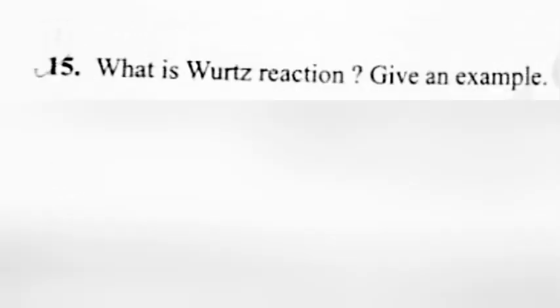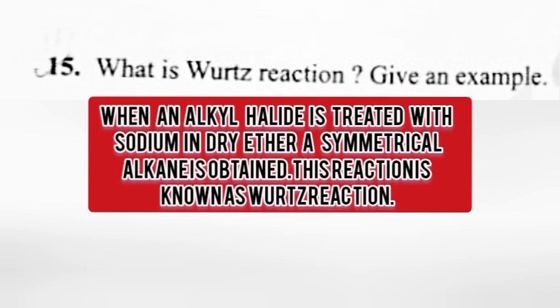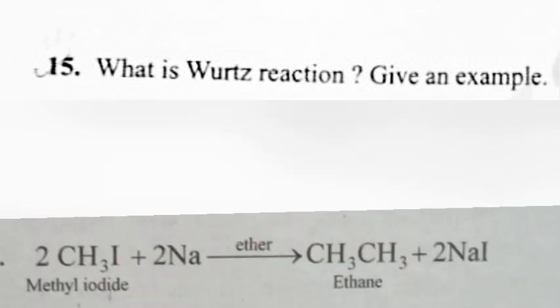Question 15: What is Wurtz reaction? Give an example. Answer: When an alkyl halide is treated with sodium in dry ether, a symmetrical alkane is obtained. This reaction is known as Wurtz reaction. Example: 2CH3I plus 2Na gives ether CH3CH3 plus 2NaI.